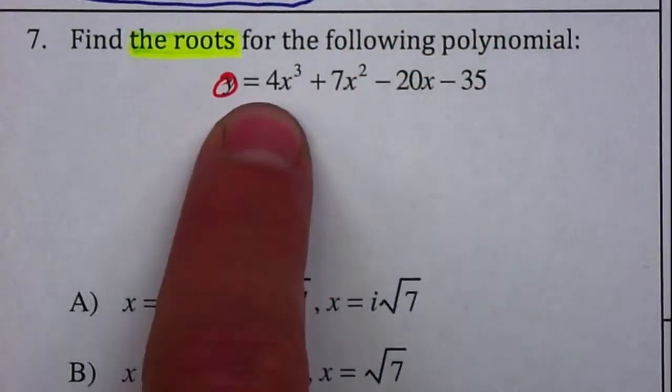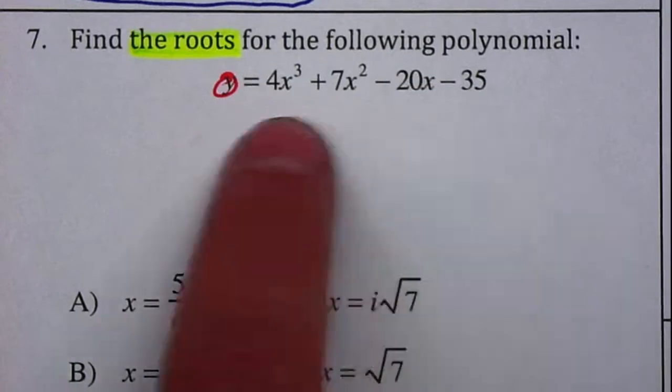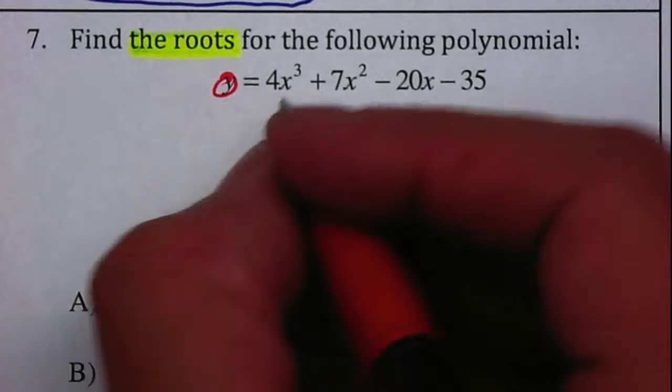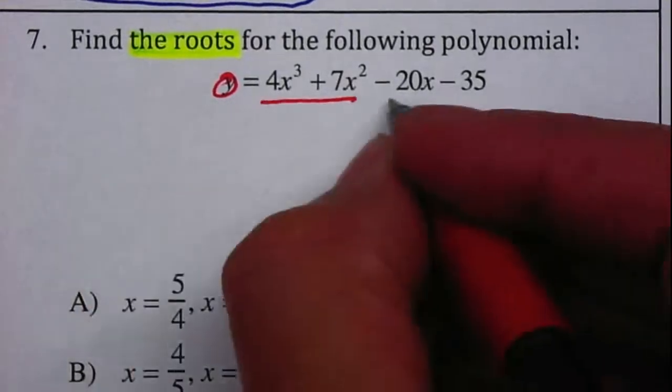In order to factor, there's no common factor between any of them. But I notice that there are one, two, three, four terms. So we are going to use a method called factor by grouping.